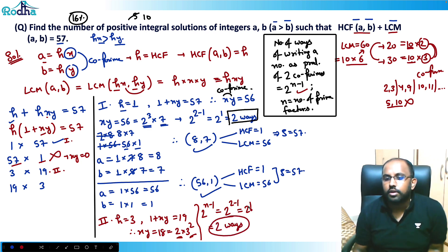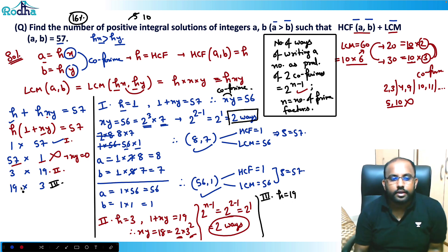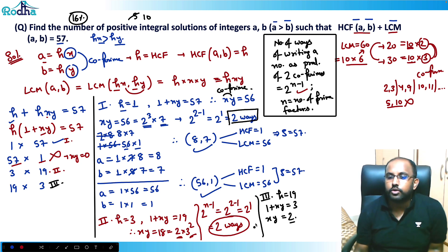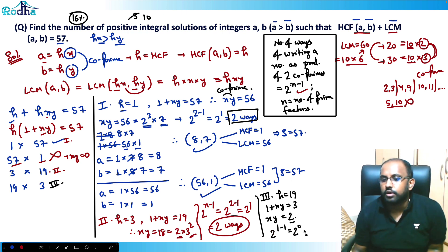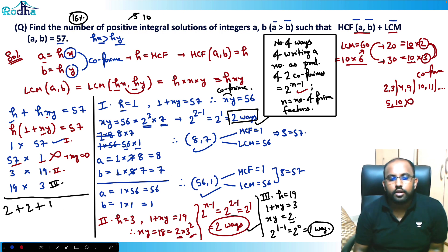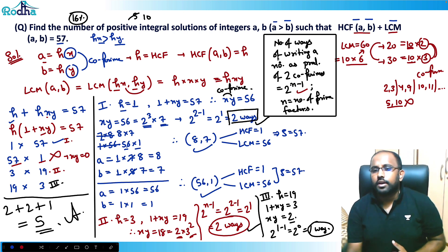Case 4: h = 19 and (1 + xy) = 3, so xy = 2. There is only one prime factor, so 2^(1−1) = 2⁰ = 1 way. Total pairs: 2 + 2 + 1 = 5. So the answer to this question is 5.